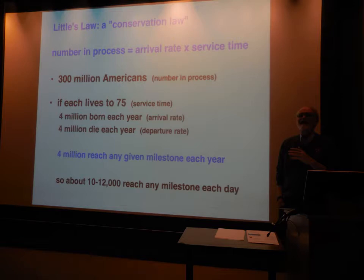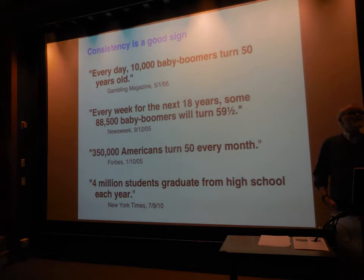So 10,000 people turn 65 every day — that's also roughly 10,000 people born and 10,000 people die every day. This oversimplifies and ignores changing birth rates and immigration, but it's a pretty decent way to reason. That means the first headline — 8,000 per month — is wrong; it's another units error. It said months when it should have been days. And here are four different ways of writing essentially the same thing: 10,000 turning 65 per day, 88,500 turning 59-and-a-half per week, 350,000 turning 50 per month, 4 million students. Their values are all consistent — consistency is a good sign.